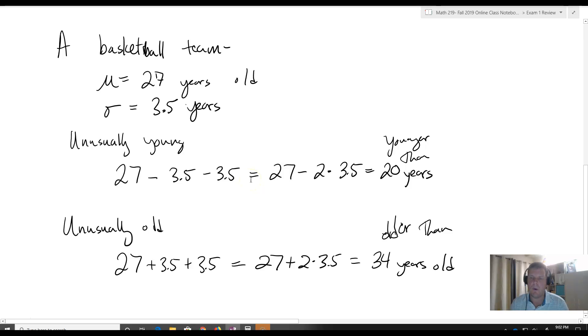If they were 17 years old, would that make them unusually young? The answer to that is yes, they are unusually young, because they are more than two standard deviations away—they're younger than 20.